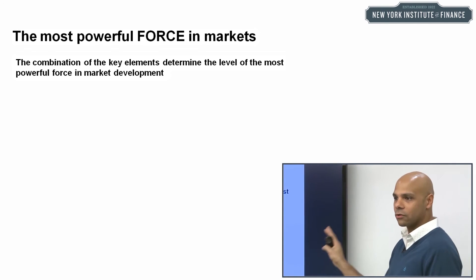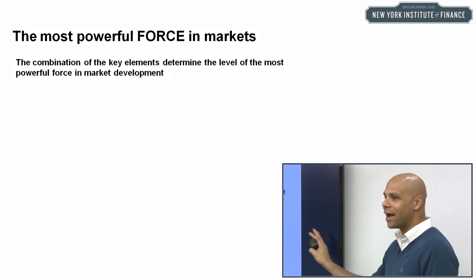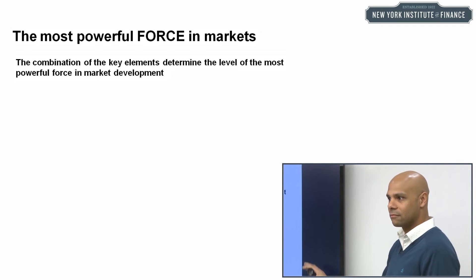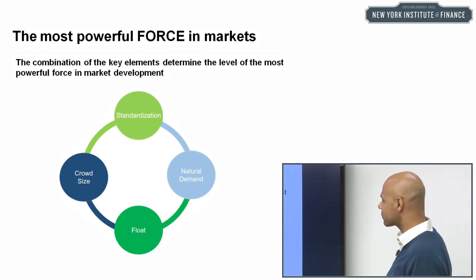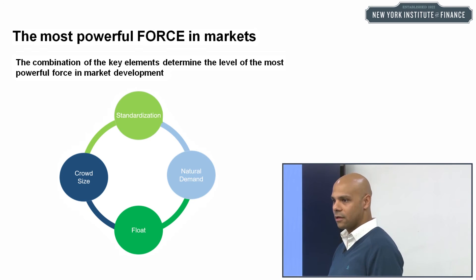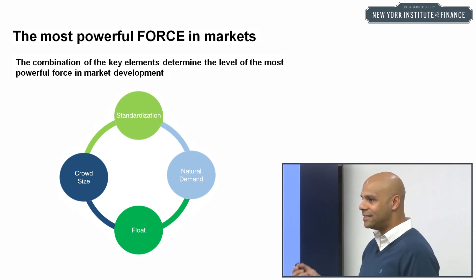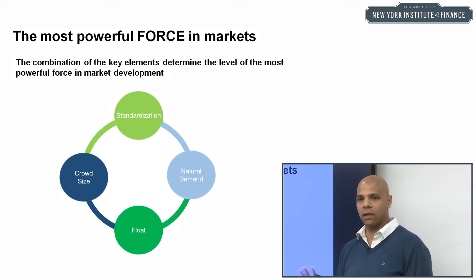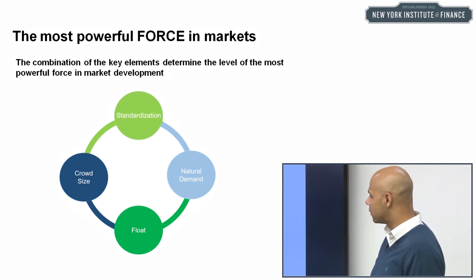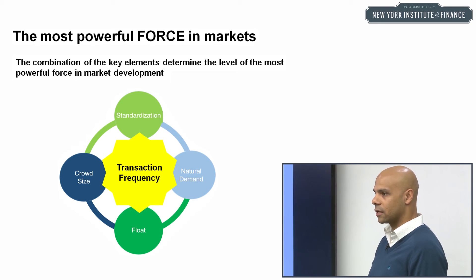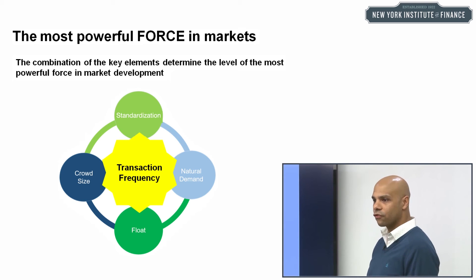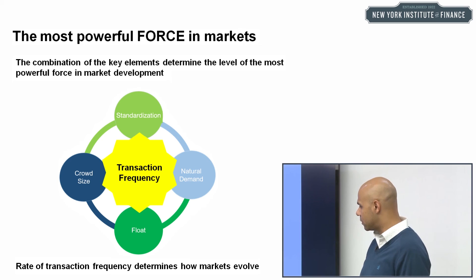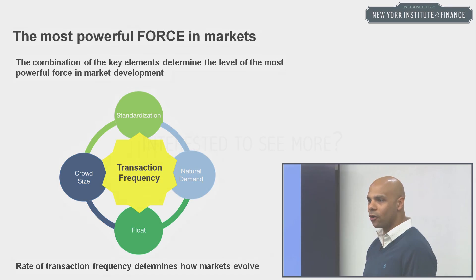These four things together do something quite powerful — they create the force in markets. I'm a huge Star Wars fan, but I also believe there is a force that binds everything in markets. If you take these four elements, their different levels ultimately control one thing, and this one thing controls market evolution: transaction frequency. How frequently something trades controls the evolutionary process of every market.